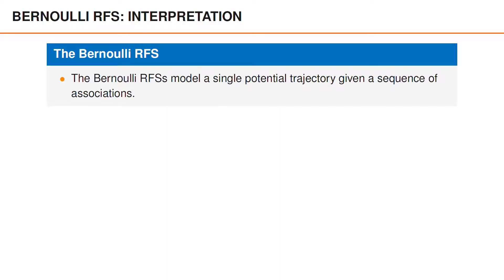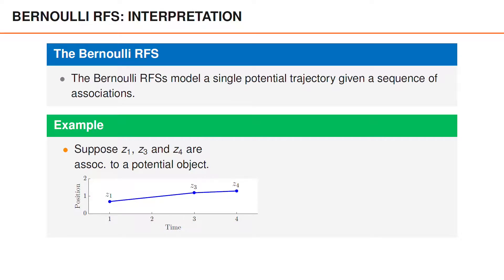The short story is that these Bernoulli random finite sets describe the distribution of a single potential trajectory given a sequence of associations. Note that we condition on a specific data association hypothesis. For instance, suppose that according to a local hypothesis, one potential object is associated to the measurements Z1, Z3, and Z4.